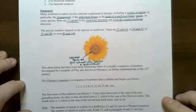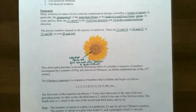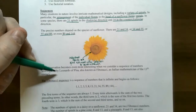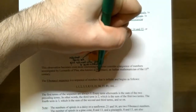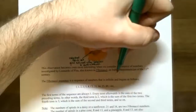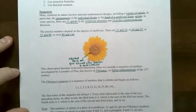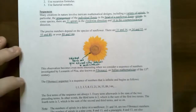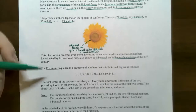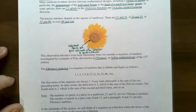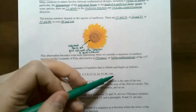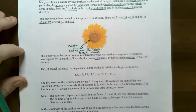This observation is even more interesting if we consider a sequence of numbers investigated by Leonardo of Pisa, also known as Fibonacci — an Italian mathematician in the 13th century. He came up with a sequence of numbers that occurs within nature quite frequently. The Fibonacci sequence, named after himself, is an infinite sequence of numbers, with the dot-dot-dot at the end meaning the pattern continues indefinitely.